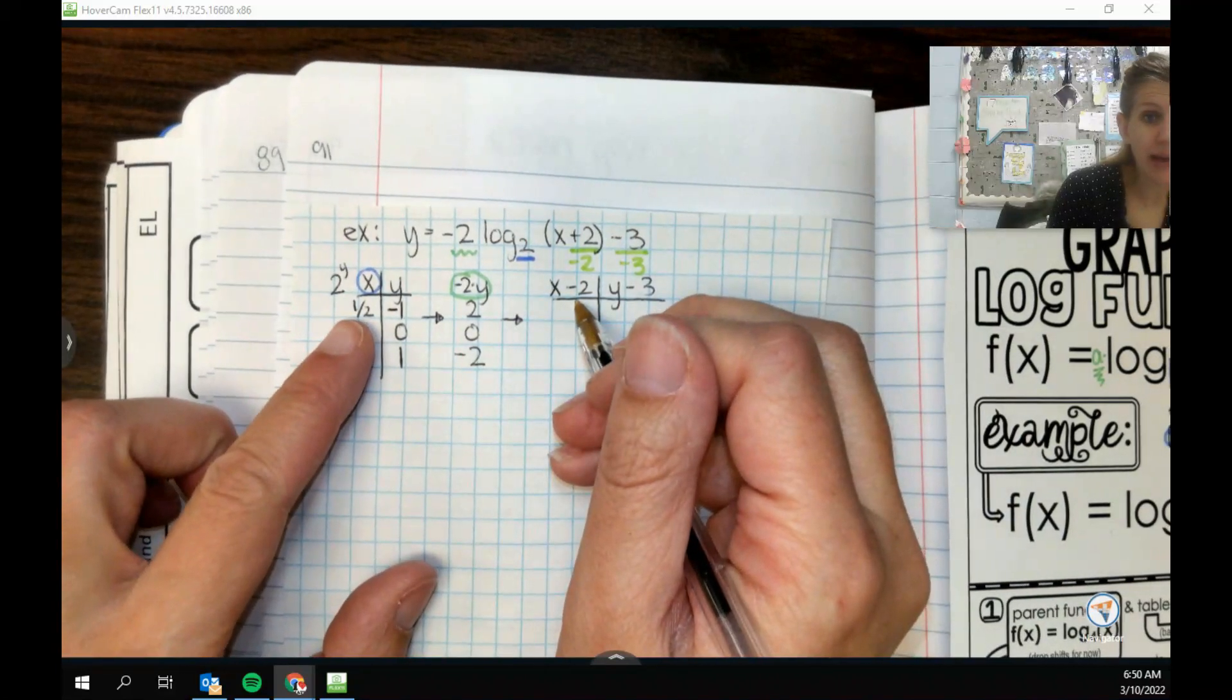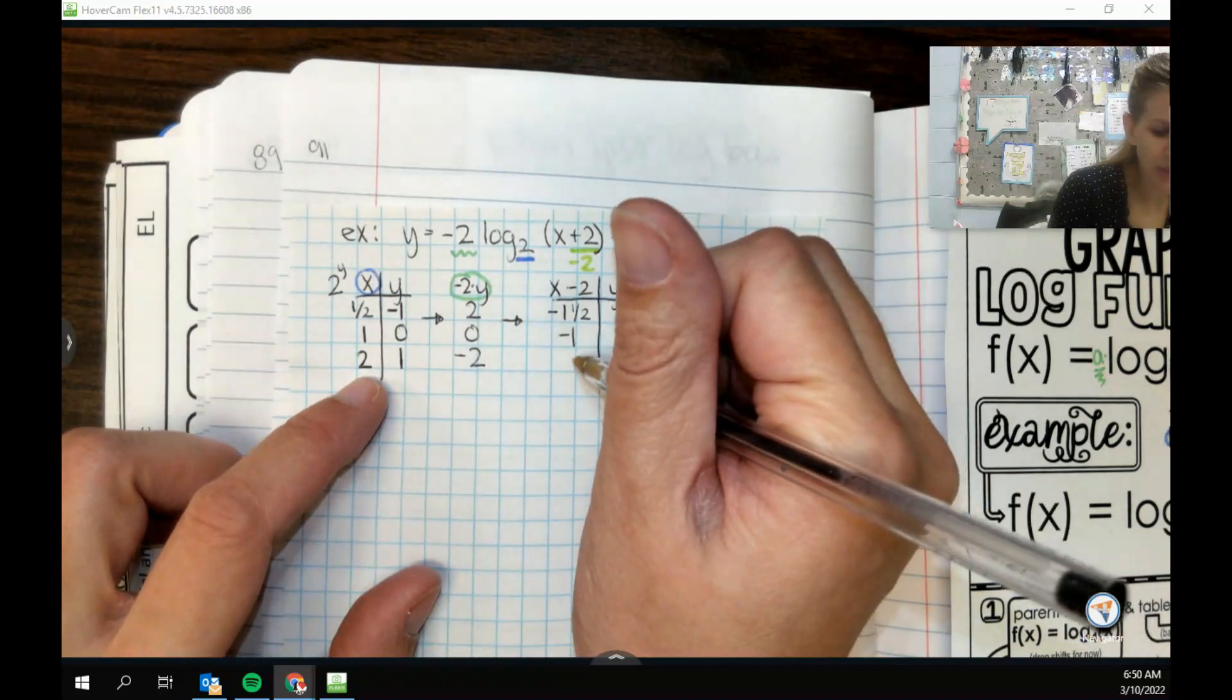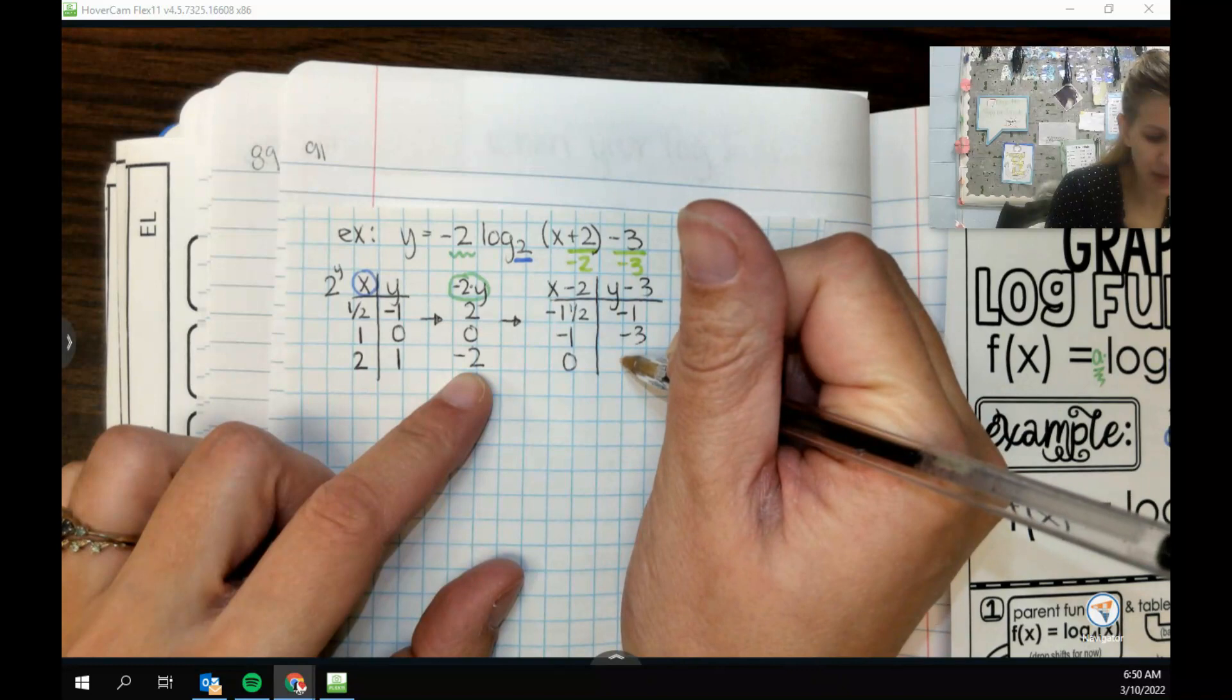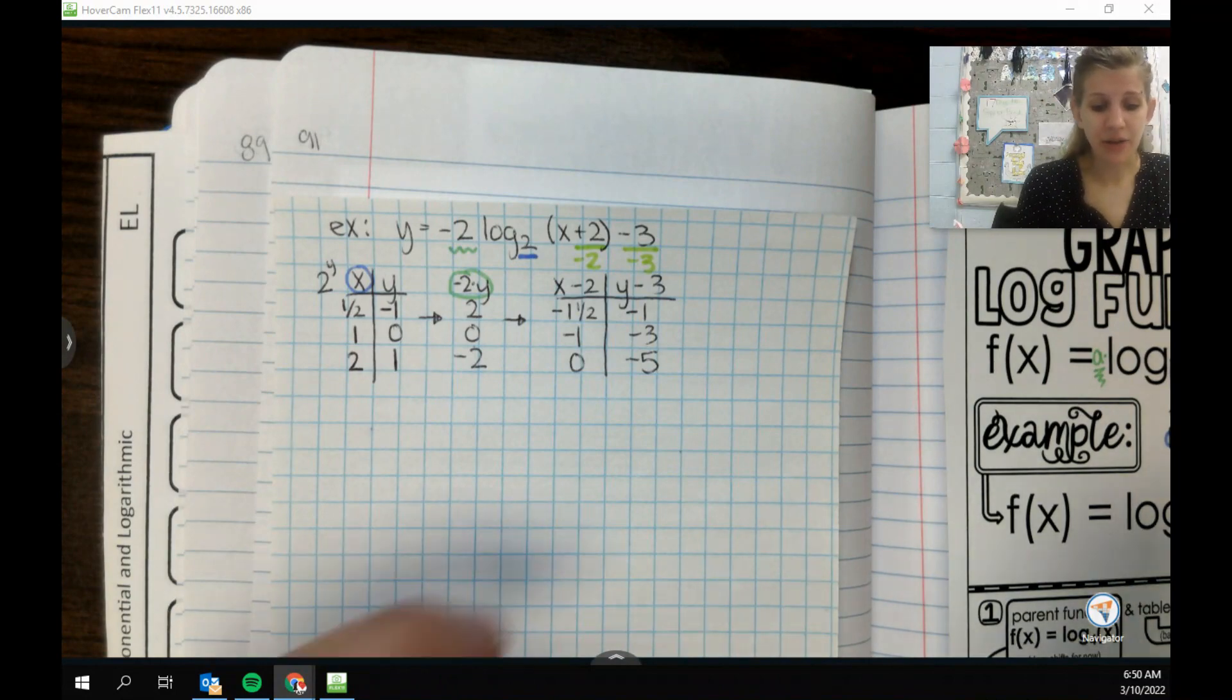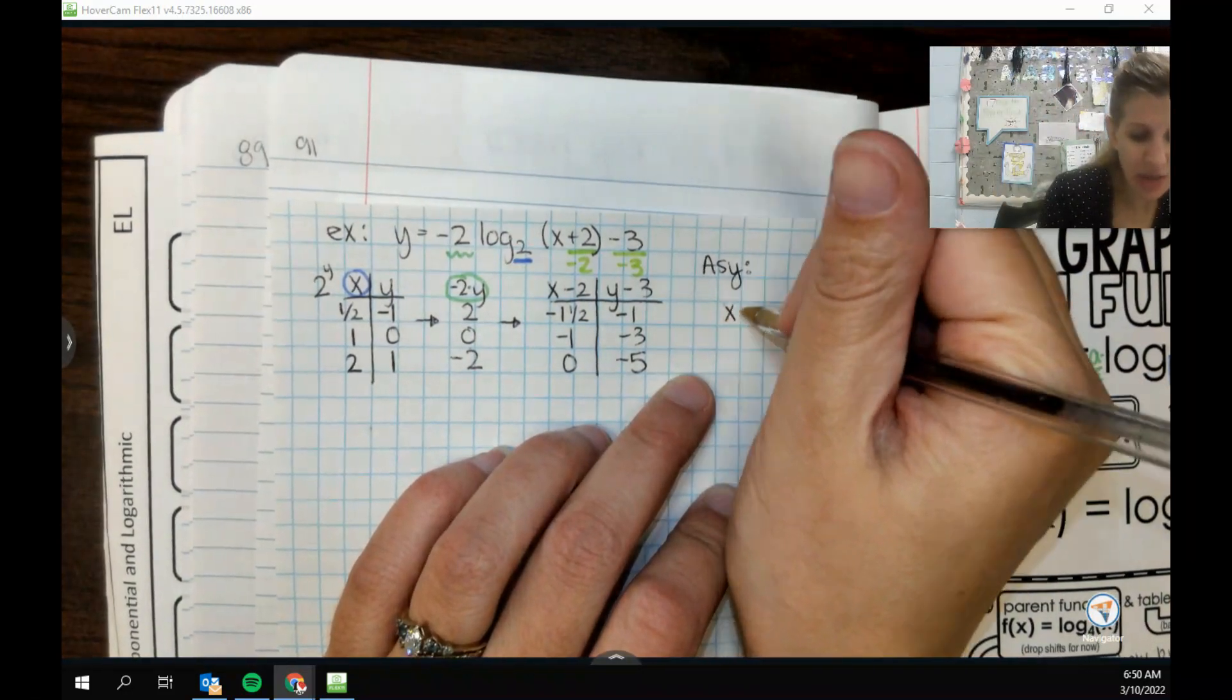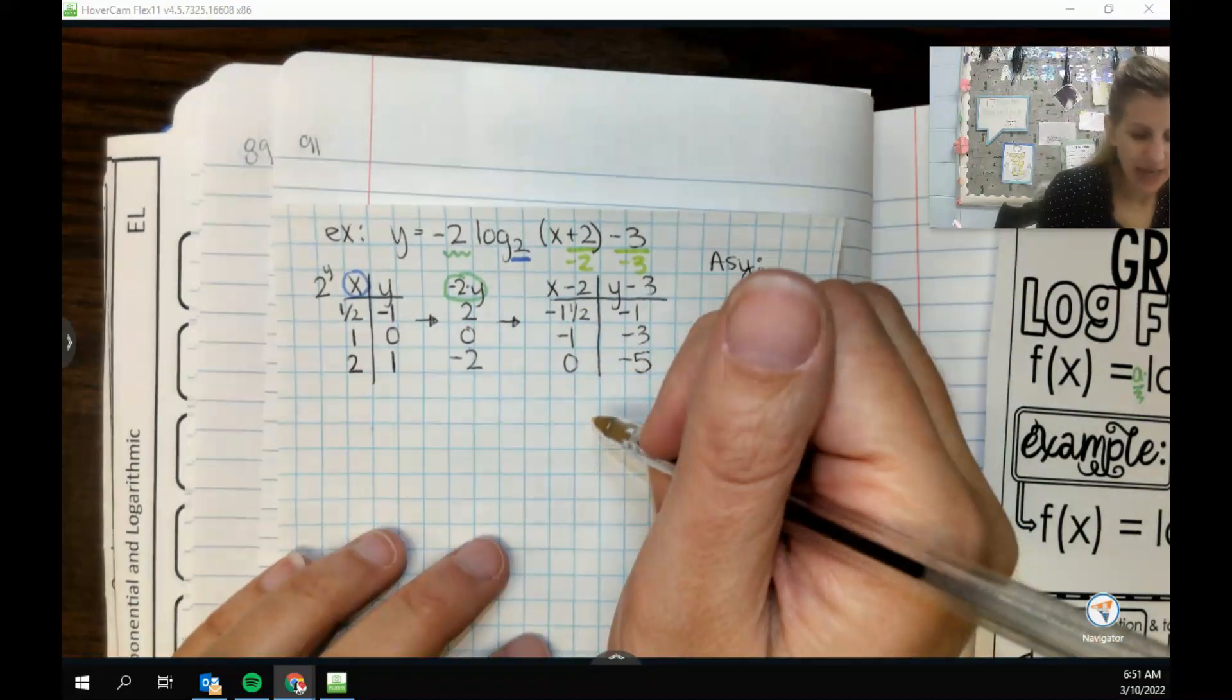So we're going to take our x values and subtract 2, and we're going to take our new adjusted y values and subtract 3. Okay, so our x values are all the way back here. So half minus 2 is negative 1 and a half. 1 minus 2 is negative 1. And 2 minus 2 is 0. And then over here with my new y values, I need to subtract 3. So negative 1, minus 3, and negative 5. And then we should be able to go graph. Another handy thing to think about is our asymptote. Our asymptote can be super helpful.